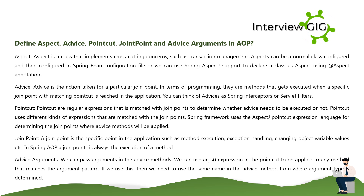Define Aspect, Advice, Point Cut, Join Point, and Advice Arguments in AOP. An Aspect is a class that implements cross-cutting concerns such as transaction management. Aspects can be a normal class configured in the Spring bean configuration file, or we can use the @Aspect annotation to declare a class as an aspect. Advice is the action taken for a particular join point — in terms of programming, they are methods that get executed when a specific join point with a matching point cut is reached.